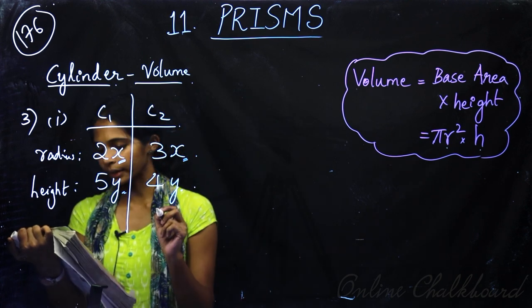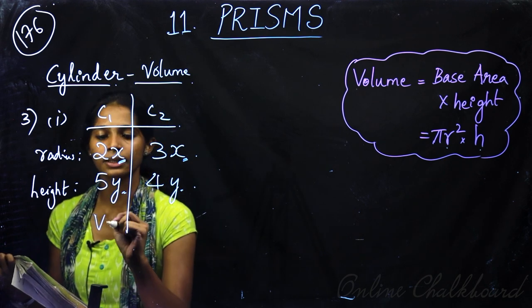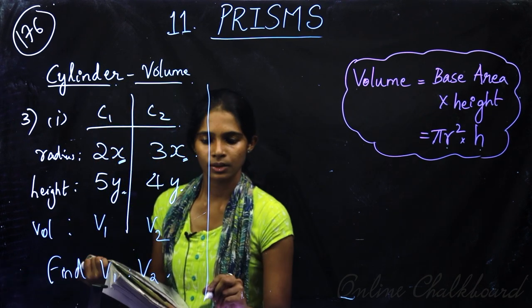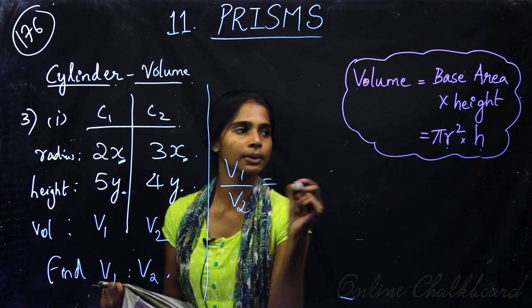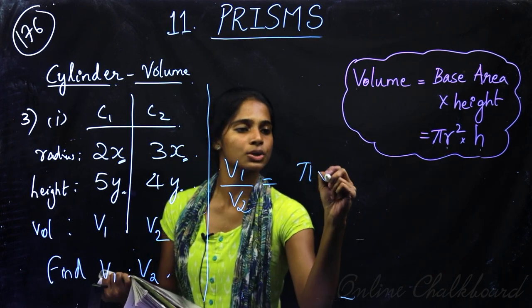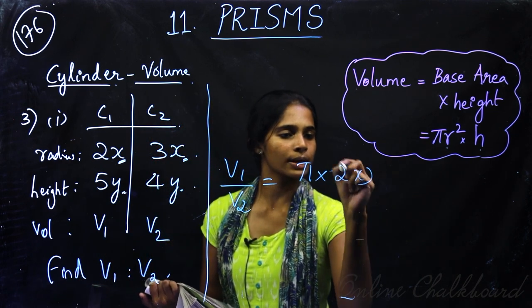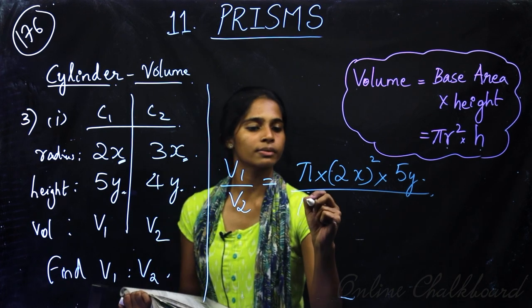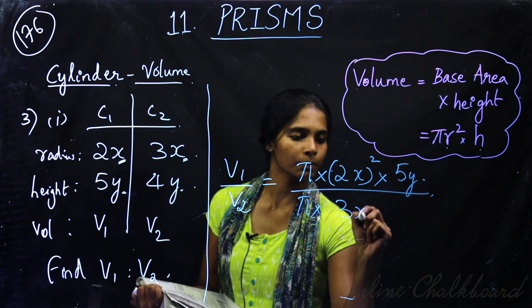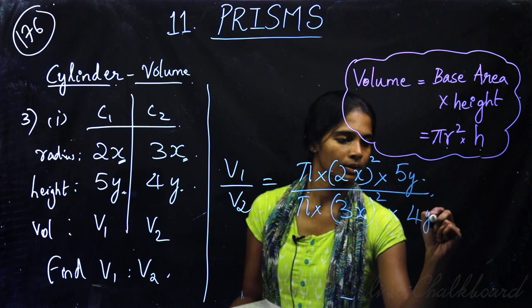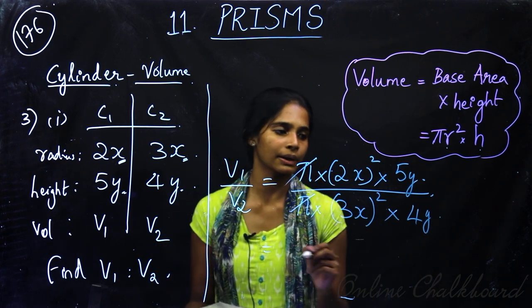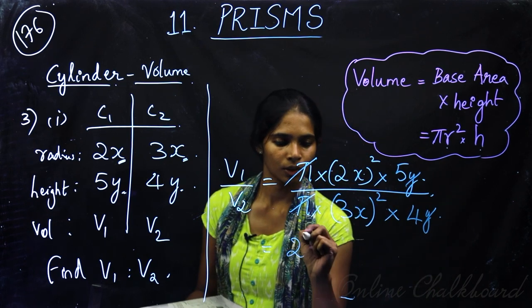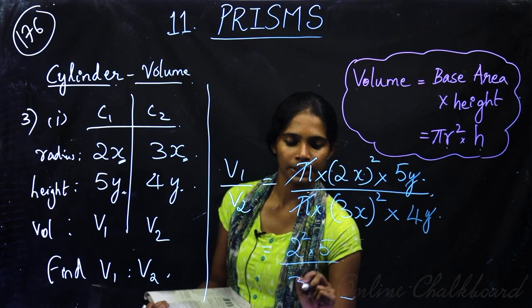We need to find the ratio V1 is to V2. Using the formula pi r squared h, V1 divided by V2 equals pi into (2x) squared into 5y, divided by pi into (3x) squared into 4y. Pi cancels, x squared cancels, and y cancels, leaving 2 squared into 5, divided by 3 squared into 4.